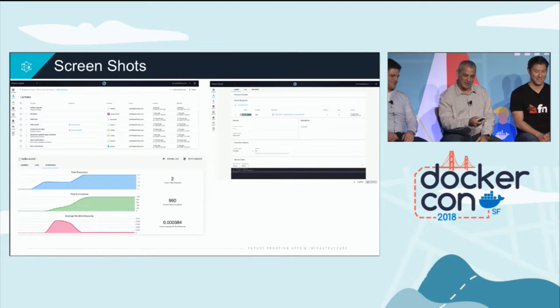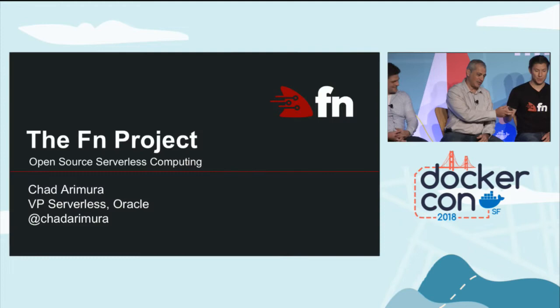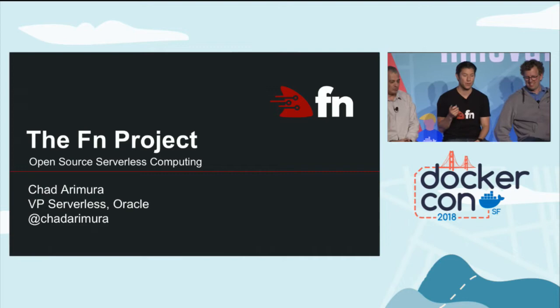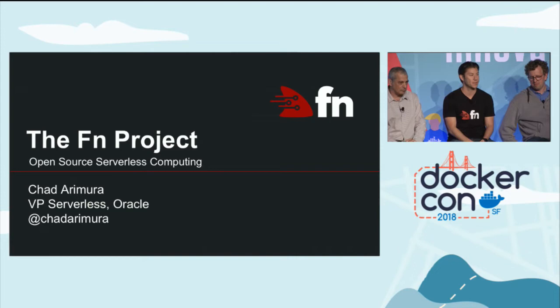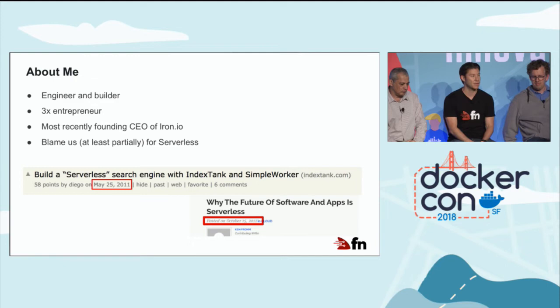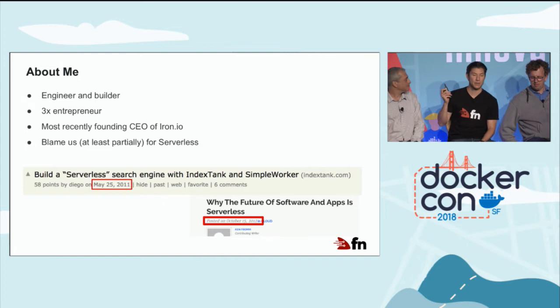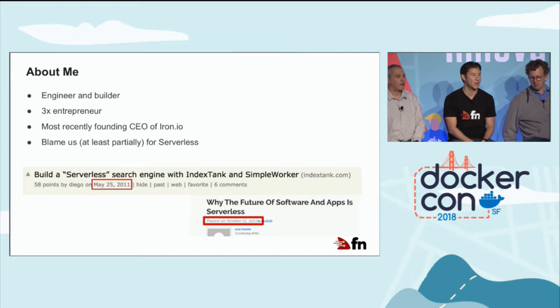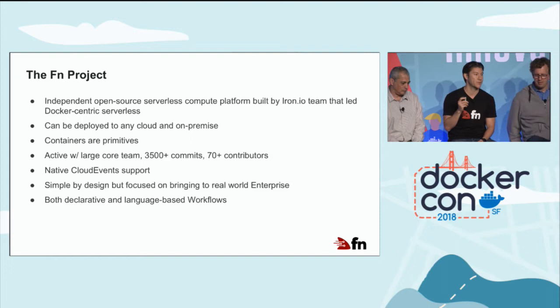My name is Chad Arimr, I'm VP of Serverless at Oracle. I lead the serverless group and one of the main projects we're working on is called the FN Project, which is an open-source compute platform. I'm a 3x entrepreneur, most recently founding CEO of Iron.io. I joined Oracle about a year ago. We started talking about serverless computing back in 2011 — there were earlier references to FaaS in 2006 — and it's really cool to see it become this whole category of computing.